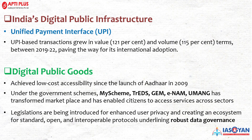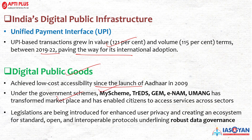India's Digital Public Infrastructure highlights: UPI transactions surged during COVID-19 lockdown and have seen a 121% increase in value and 115% increase in volume between 2019 and 2022, paving the way for international adoption. Under Digital Public Goods, Aadhaar accessibility has been achieved since its launch. Key government schemes enabling digital public goods include: MY Scheme, TREDS, GeM, e-NAM, and UMANG — all transforming how citizens access services across sectors.